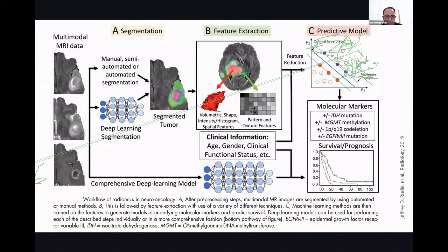They have been doing the volumetric analysis, voxel-based morphometry, histogram of the spatial features of the tumor, and they put all those things into a comprehensive deep learning model, and based on that, they had this predictive model.